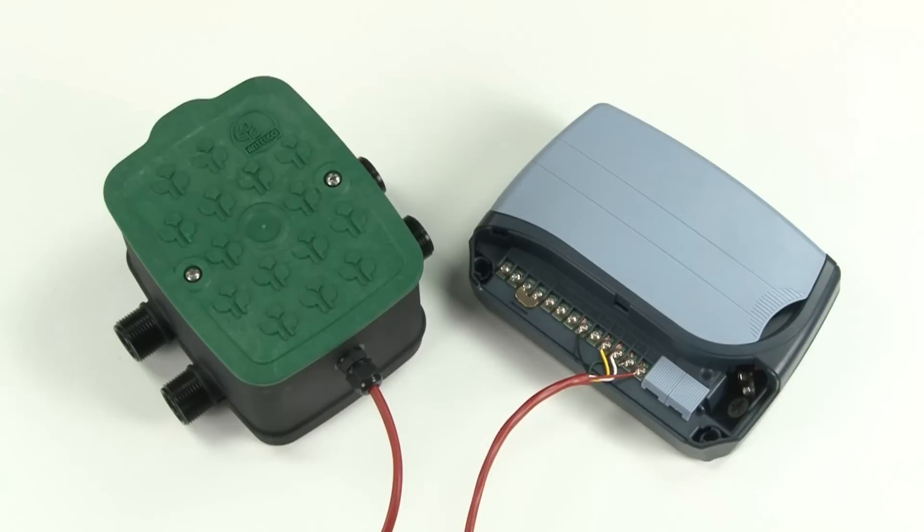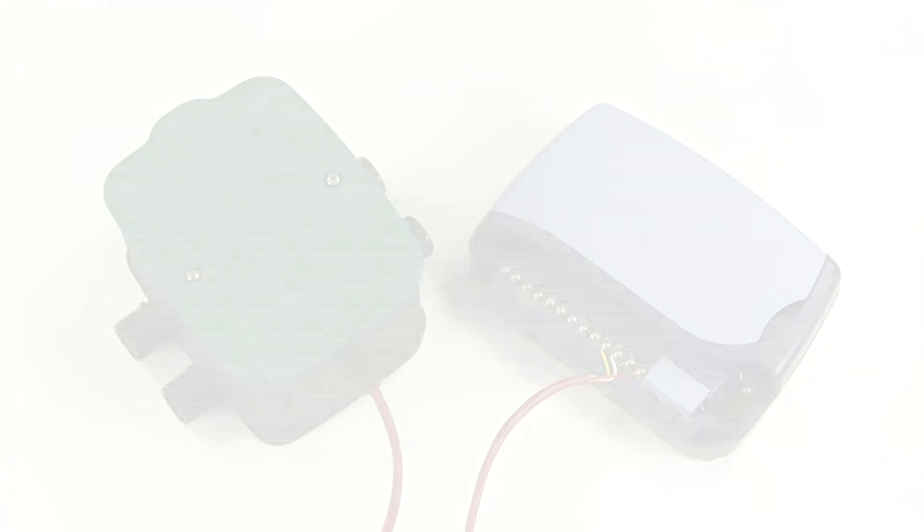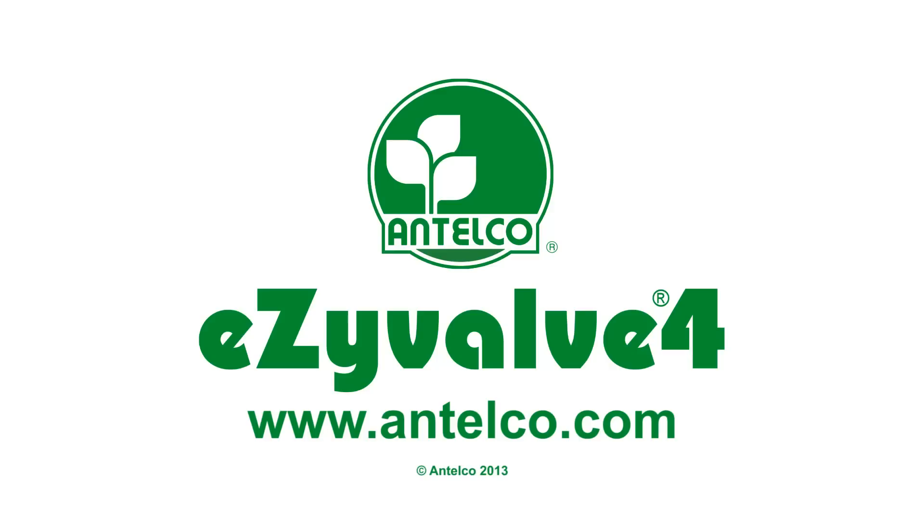This completes the wiring instructions for your EasyValve 4. Further information on water connections and irrigation components can be found on the Antelco website at www.antelco.com.